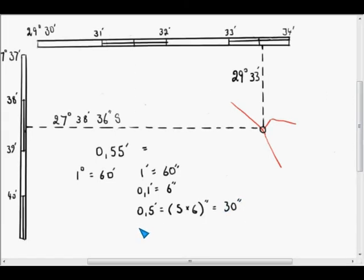It follows then that 0.05 minutes is equal to 1 tenth of that, which is obviously 3 seconds. So to get 0.55, we add those two, and that gives us 33 seconds, which allows us to complete our longitude here. So it's 29 degrees, 33 minutes, 33 seconds, and there's no relation between those two 33s, and of course we mustn't forget to say that that is east.